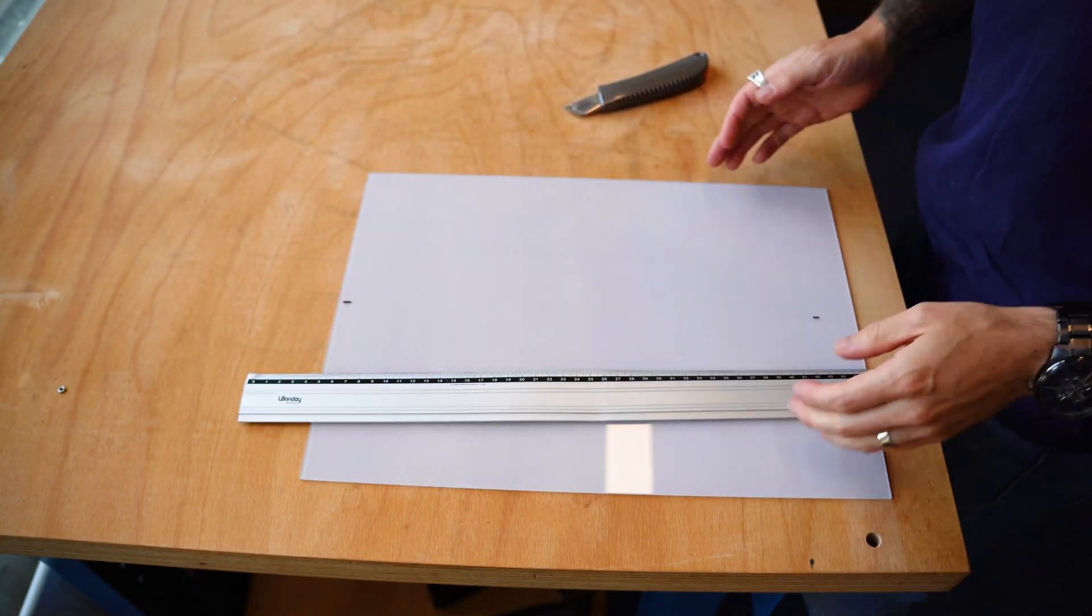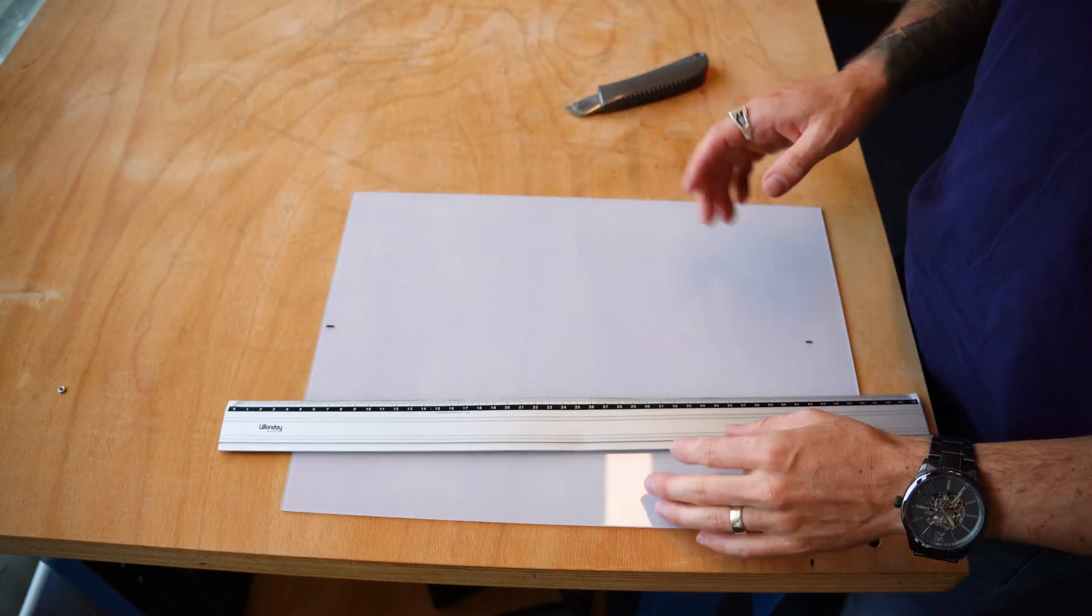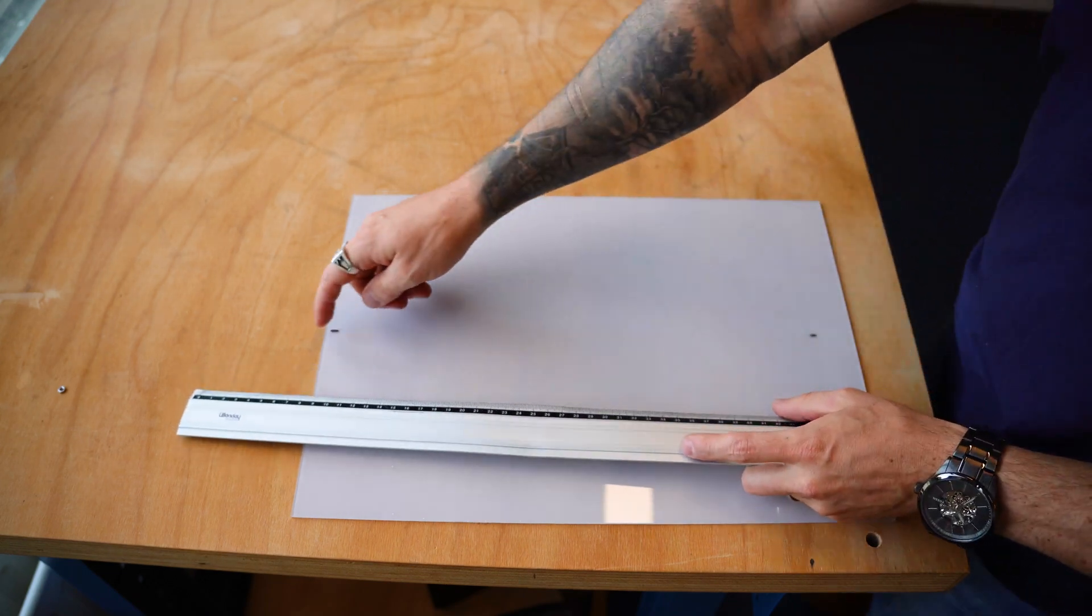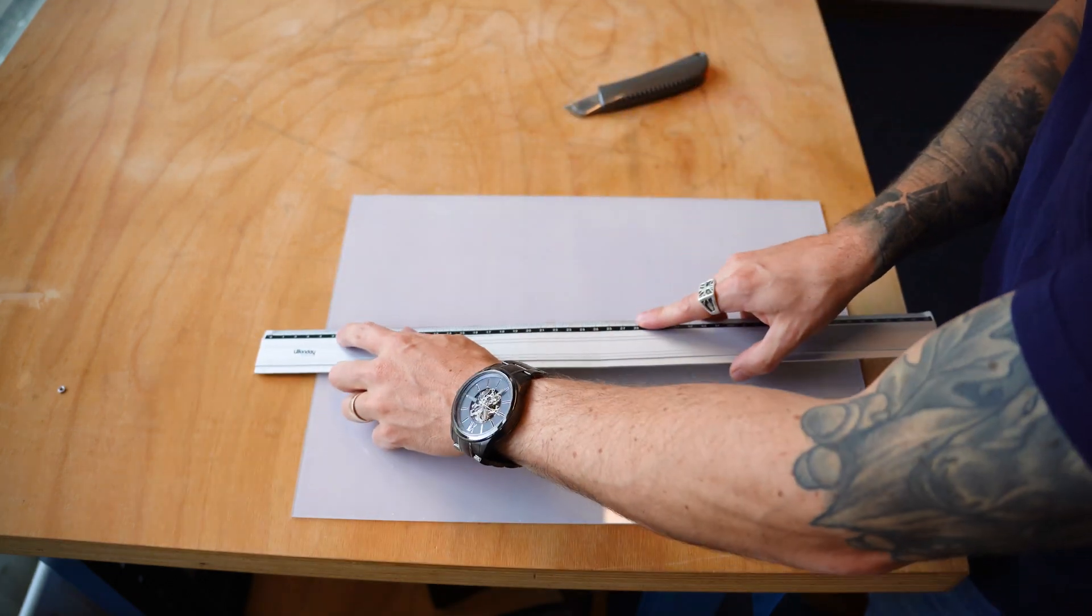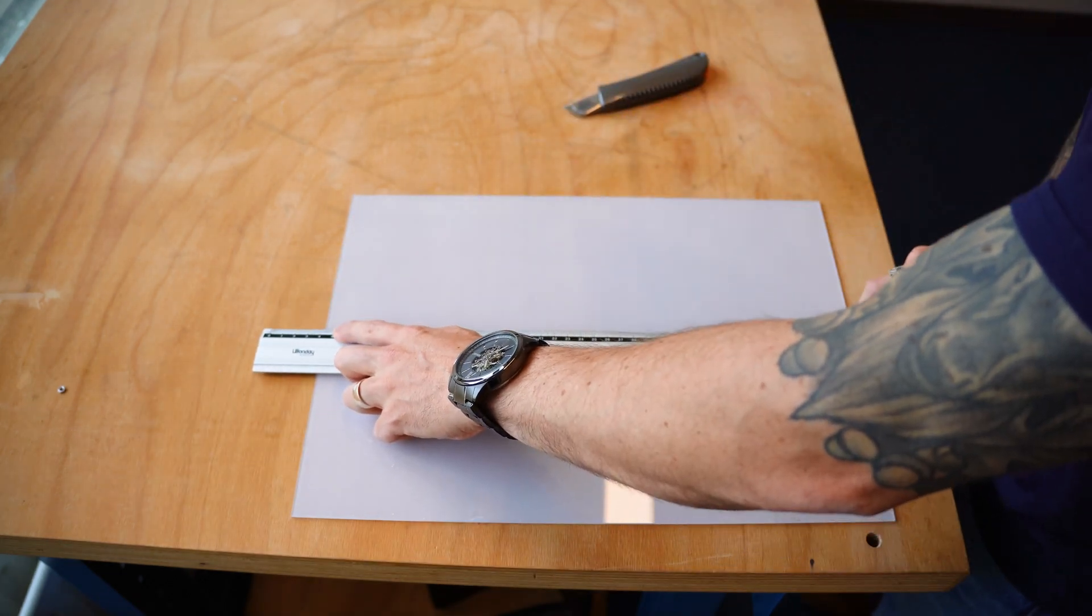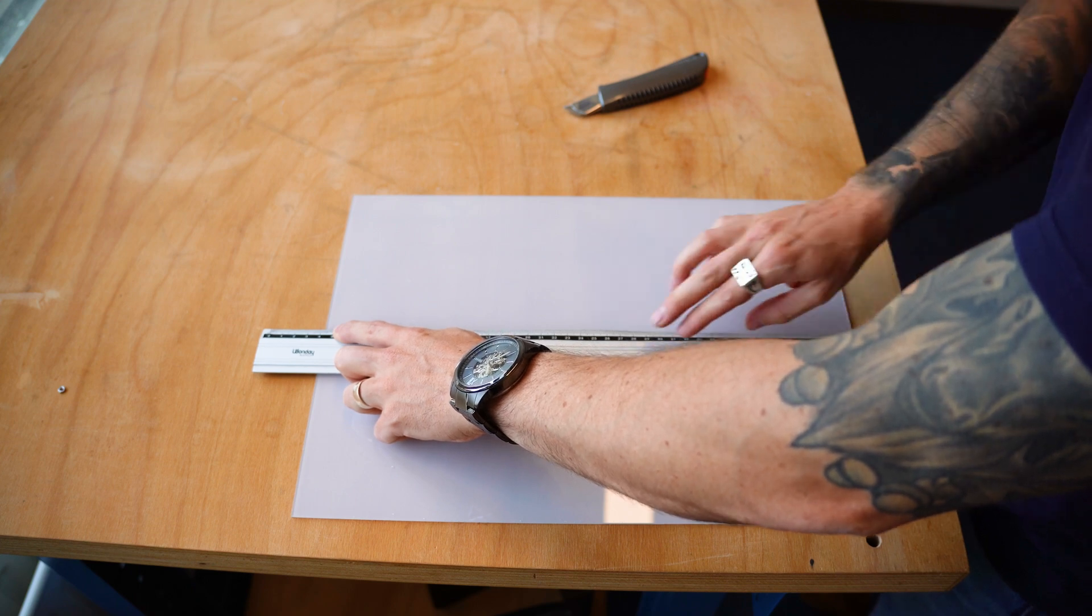I've already gone ahead and marked out I need 140 millimeter width here. So what I like to do is I like to get my mark and I cover it up just on the outside of my edges here on both sides.